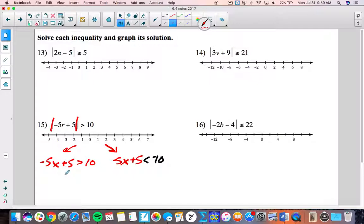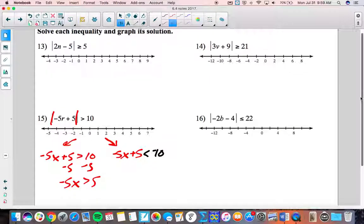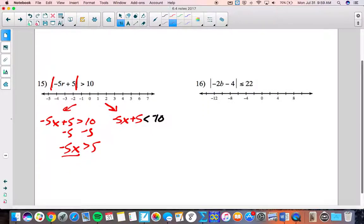Now we solve for x. We subtract 5, subtract 5. We get -5x is greater than 5. And now we divide by negative 5. Oh boy, we have an inequality and we're dividing by a negative. So we need to flip the direction of the inequality here. So there is one solution. In fact, we have a number line. I could go ahead and just do that right now. Open dot, x is less than -1, so let's go going that way.